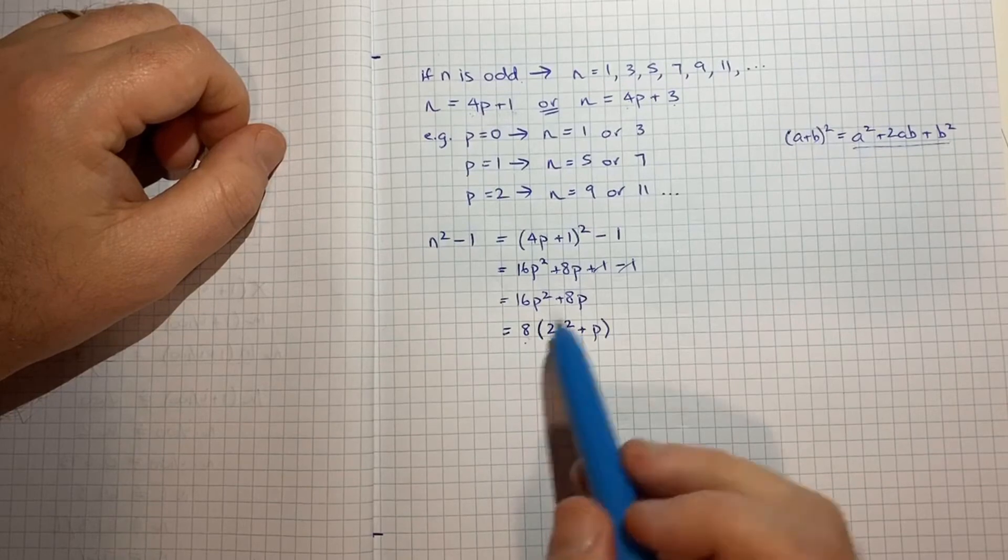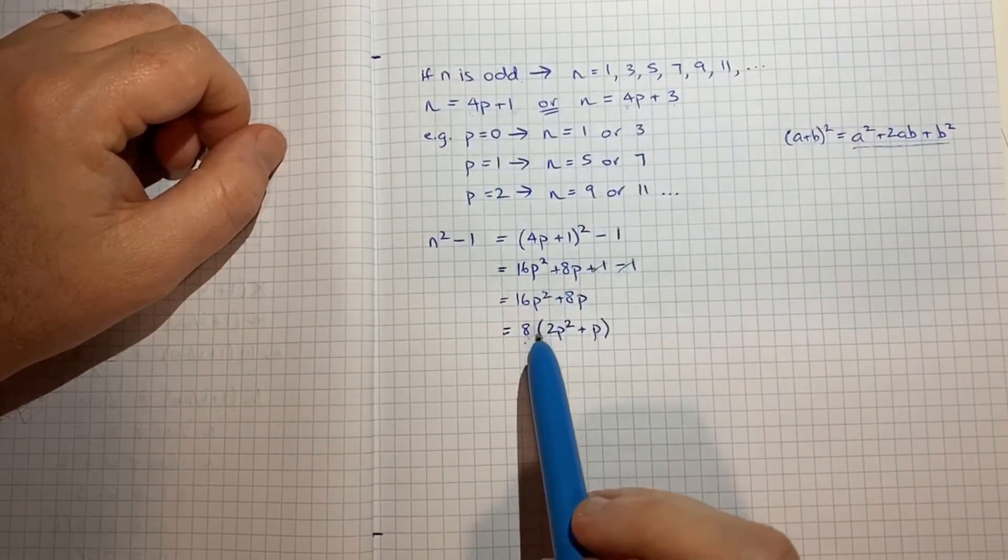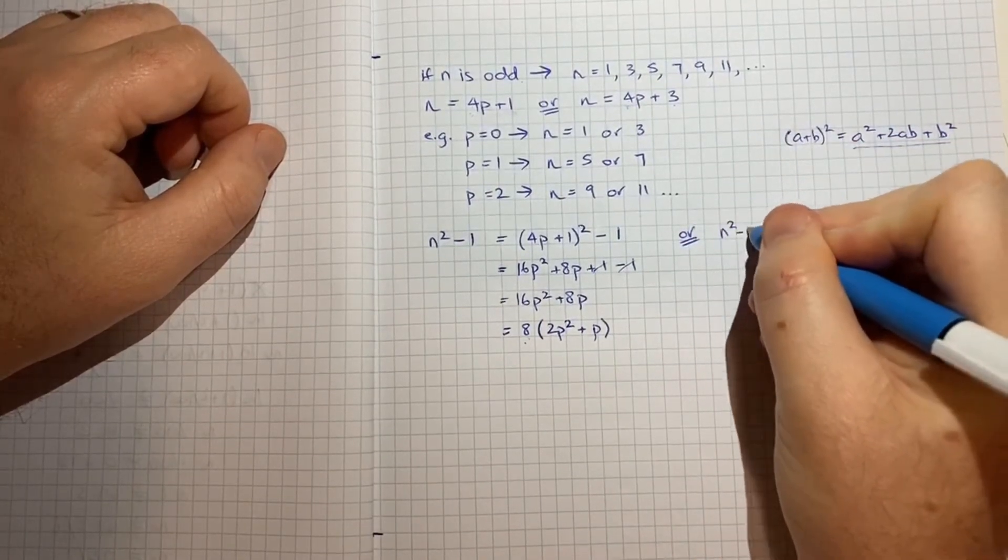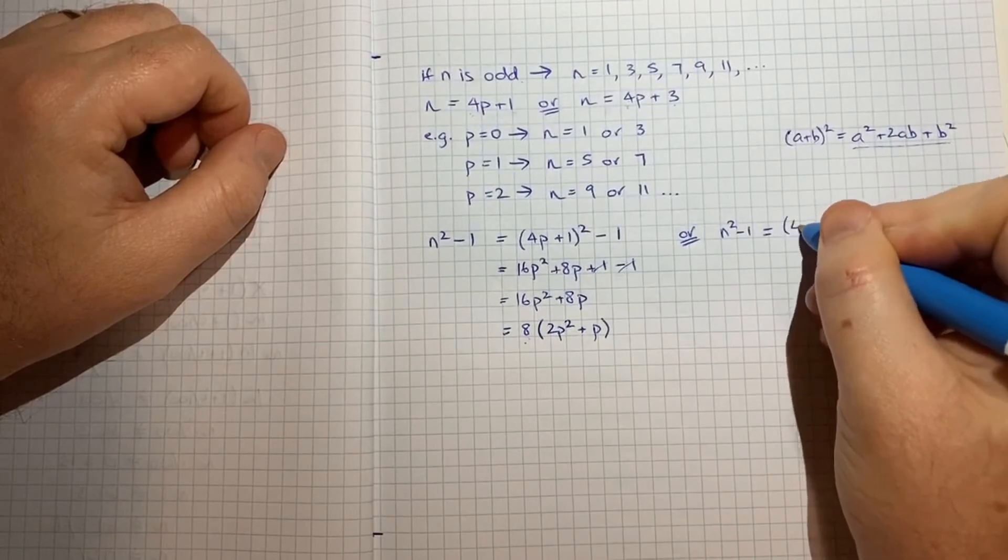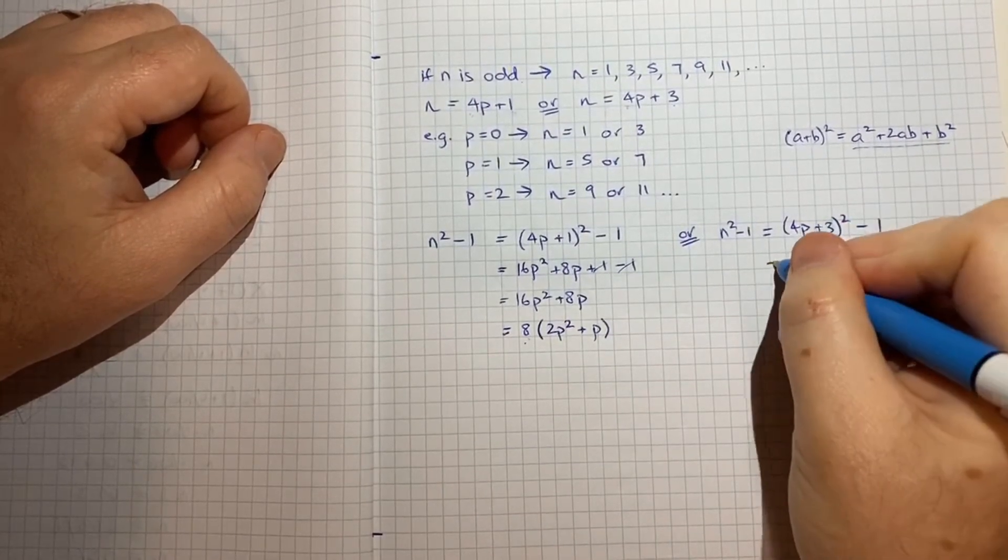So that's a good start. Now what we need to do is see if we get to the same place with our other way of defining n. So we'll say or n squared minus 1 is equal to 4p plus 3 squared minus 1.